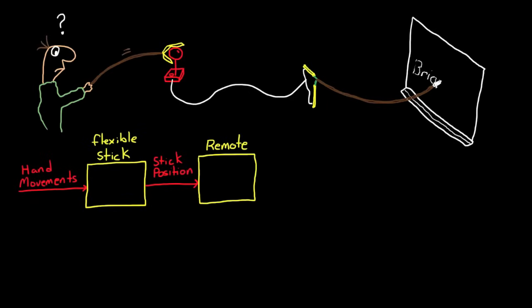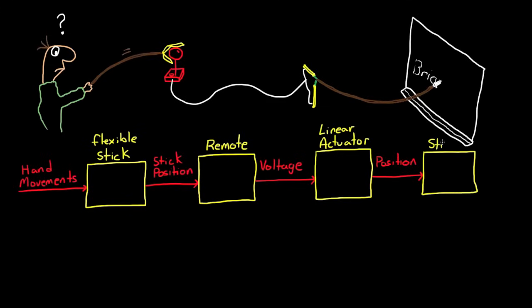The position is now the input into the remote control. The remote control, another black box, converts the position into an electrical signal in the form of changing voltage. This voltage is applied to the linear actuators, which converts the electrical signal into position again. This position is the input into the final flexible stick whose output is the position of a piece of chalk, which finally draws on the blackboard.